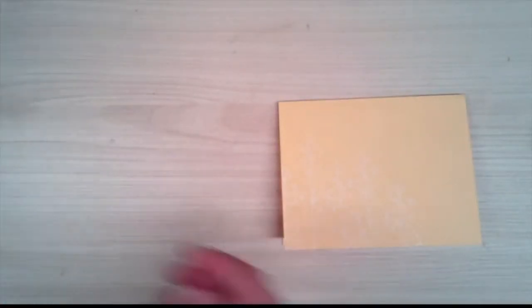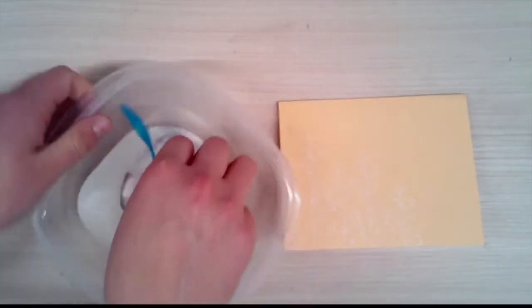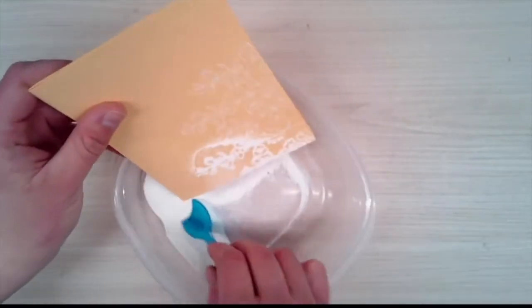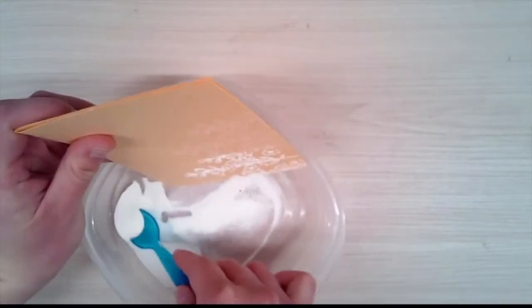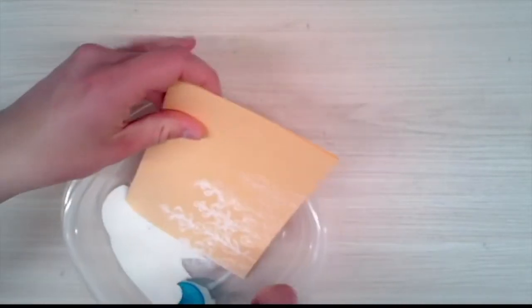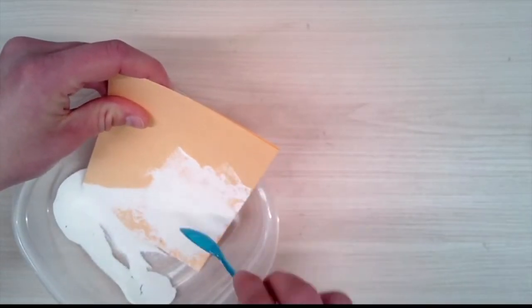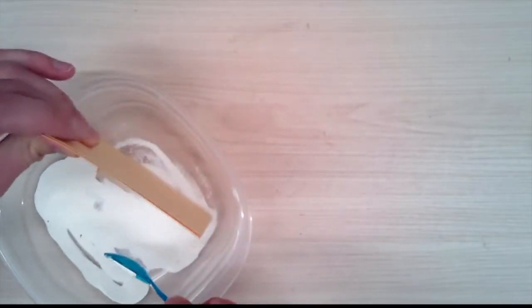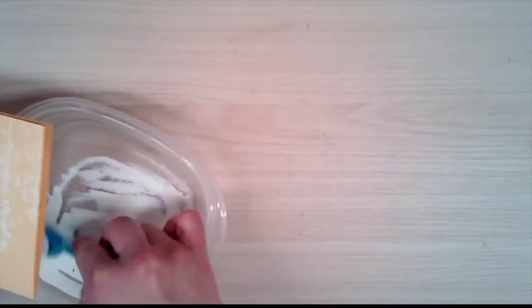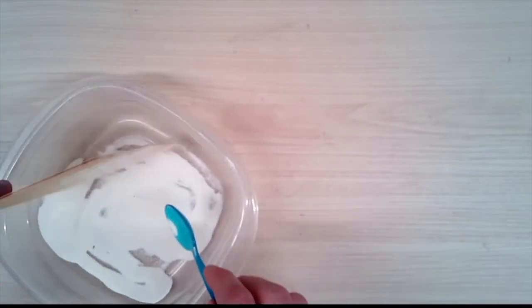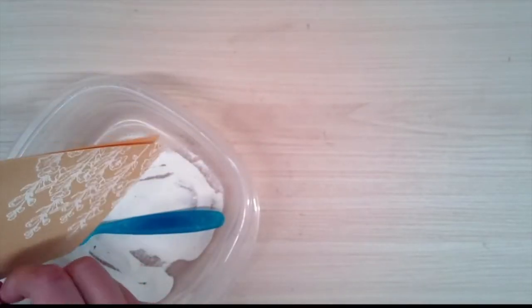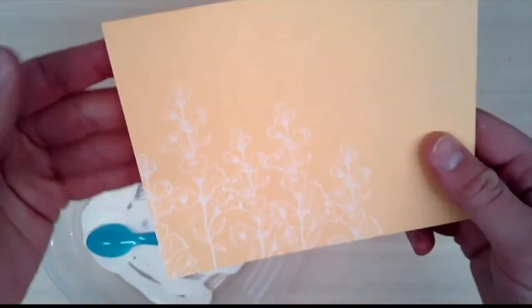Grab your white embossing powder and get embossing powder all over, then shake off the excess. Make sure you got all your edges. You can also flick it just a tad bit. You can see right there that looks amazing and the image is very prominent.